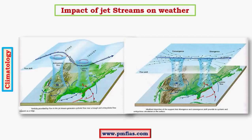When there is divergence created by the movement of the jet stream, the trough region creates an anti-cyclonic condition in the upper levels of the troposphere. Divergence in the upper levels is associated with upliftment of air, as it creates a vacuum. This vacuum is filled by uplifting air, and upliftment creates a low pressure system at the bottom. Low pressure at the surface is associated with convergence.